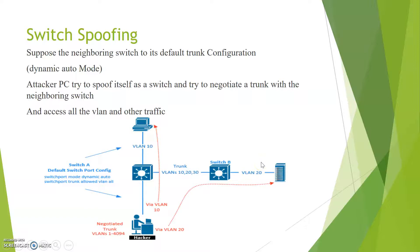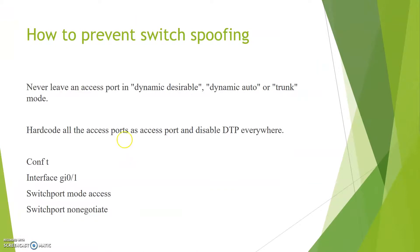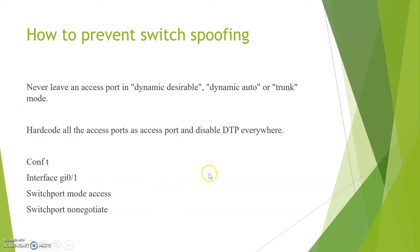That is the purpose of switch spoofing — it is a way of attacking the trunk port. To secure the trunk port, there are two approaches. First, hard code all access ports and never leave them at default. If a port is unused, shut it down. Otherwise, configure it as an access port and apply 'switchport nonegotiate' to prevent the attacker from negotiating trunking with the neighboring switch. This prevents DTP frames and blocks the attacker from establishing a trunk.